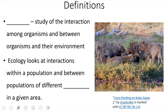Ecology is the study of the interaction among organisms and between organisms and their environment. This can mean organisms of the same species — multiple individuals in a single population — and also interactions between different species, such as predator-prey interactions or predator and food source. Ecology looks at interactions within a population and between populations of different species.